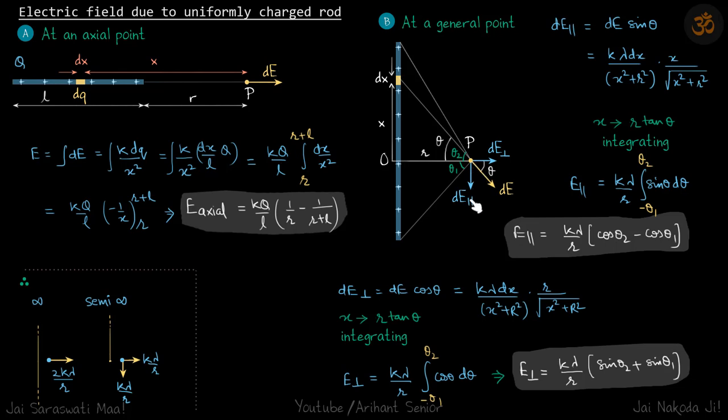So dE parallel should be dE sin theta. You put the value of dE, that should be k dq by square of this distance which is x square plus r square times sin theta which is x upon root of x square plus r square.